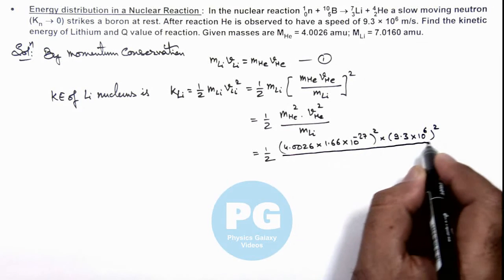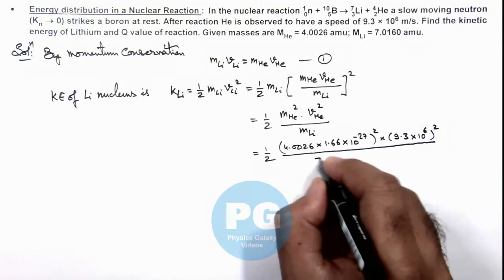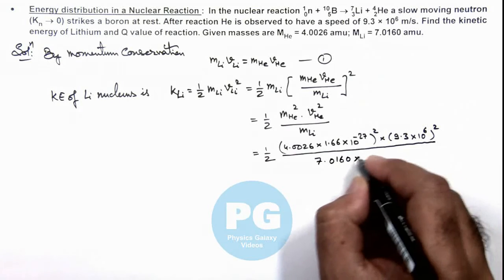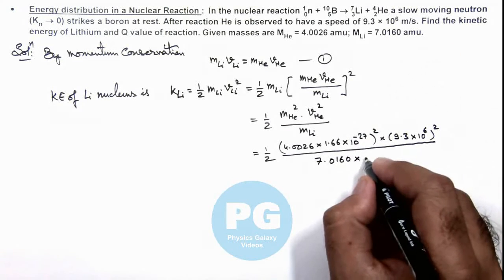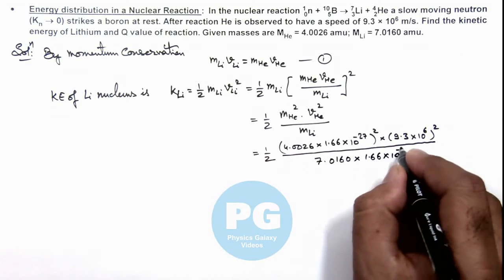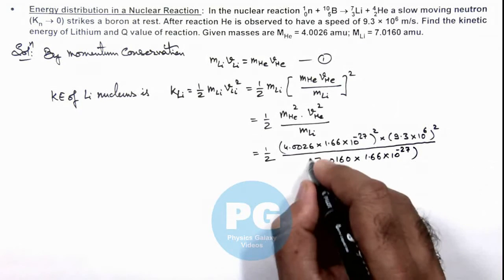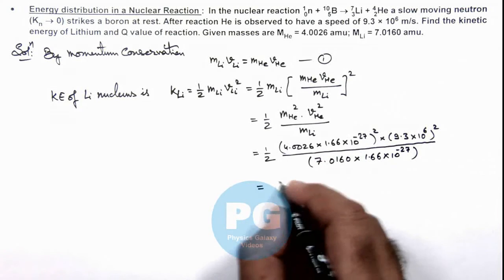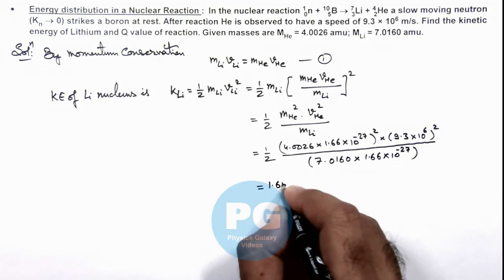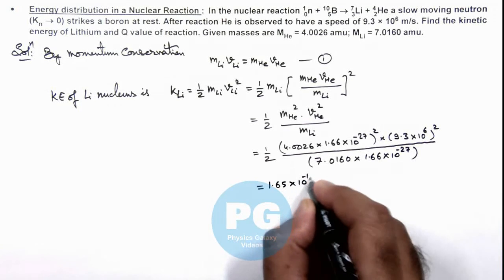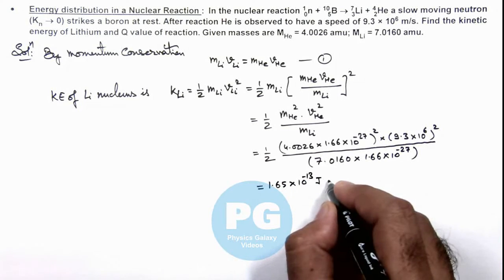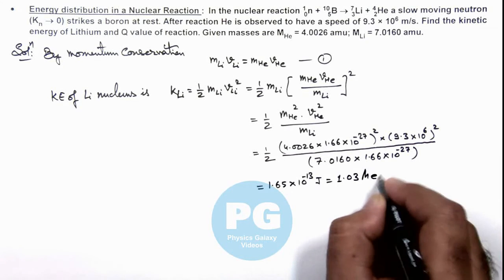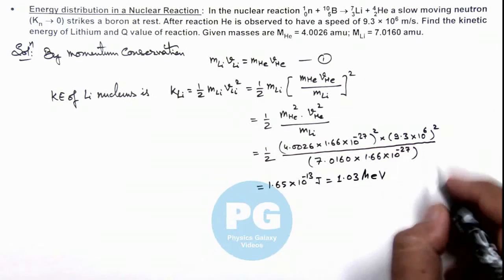whole divided by the mass of lithium which is 7.0160 × (1.66 × 10⁻²⁷ kg). On simplifying this value we numerically get 1.65 × 10⁻¹³ joules, which equals 1.03 MeV. So this is the kinetic energy of lithium nucleus, which is one of the results of this problem.